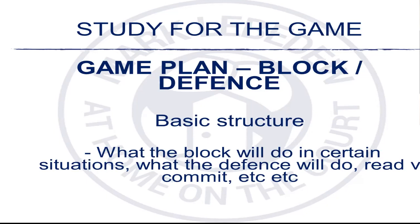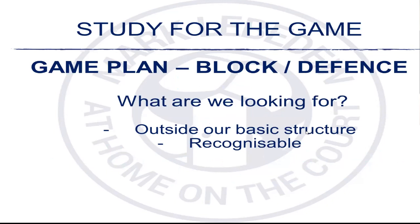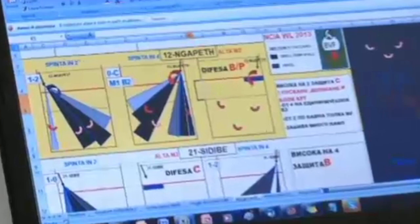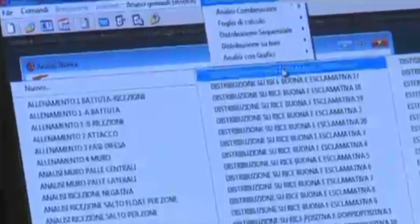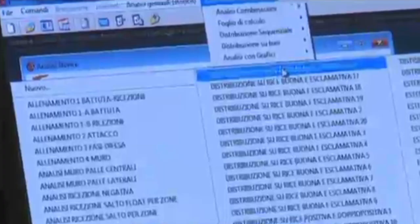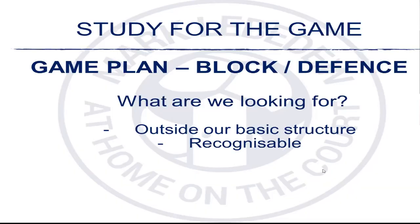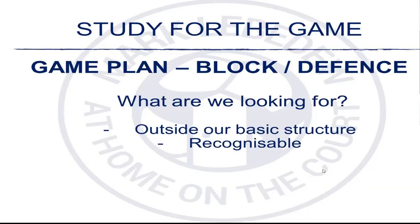When we play against a team that we've never seen, we have a way of playing that is our way of playing. We have our basic outline, our basic way of playing, and then when we start to prepare the game plan and watch the other team, we are looking for things that are outside of our basic structure. That means if we find a team that plays the way we want to play, then we don't have to prepare any match plan.